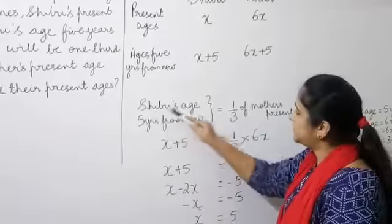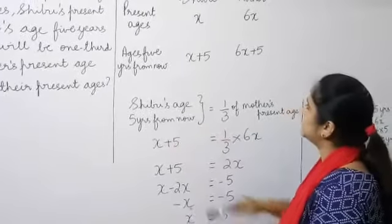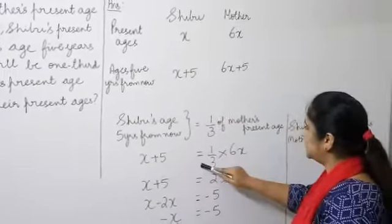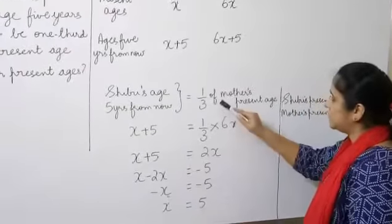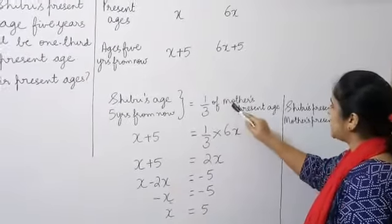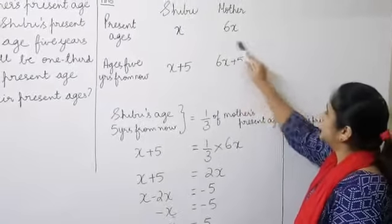So, what would be Shibu's age 5 years from now? X plus 5 is equal to one third of, meaning multiplication, mother's present age.